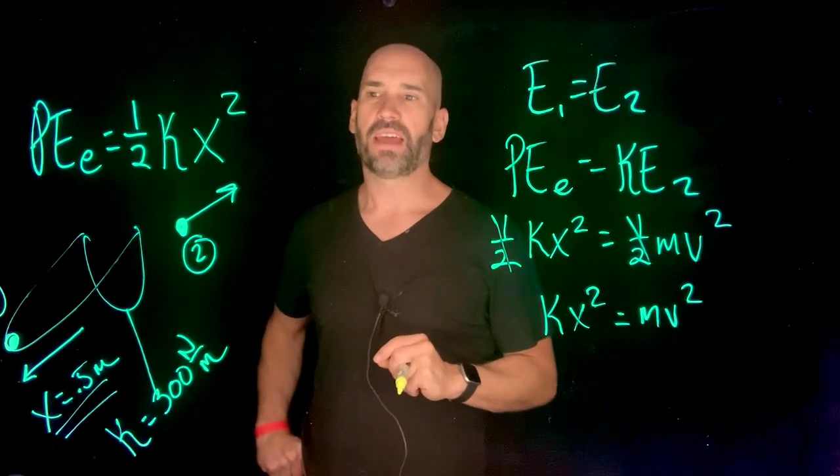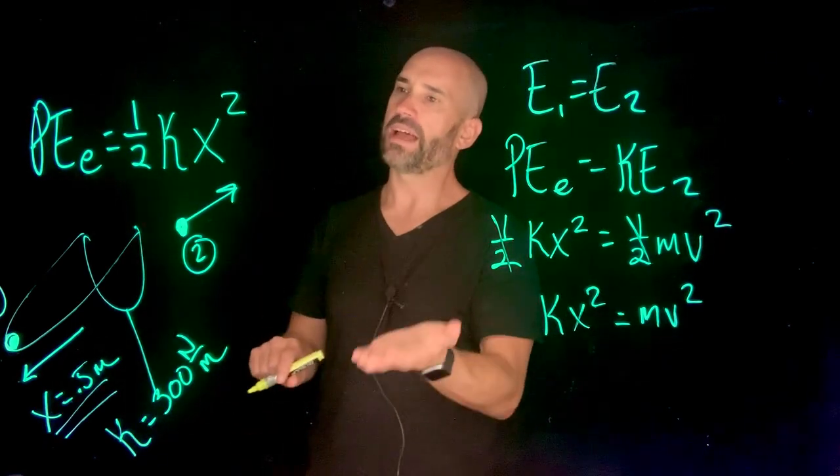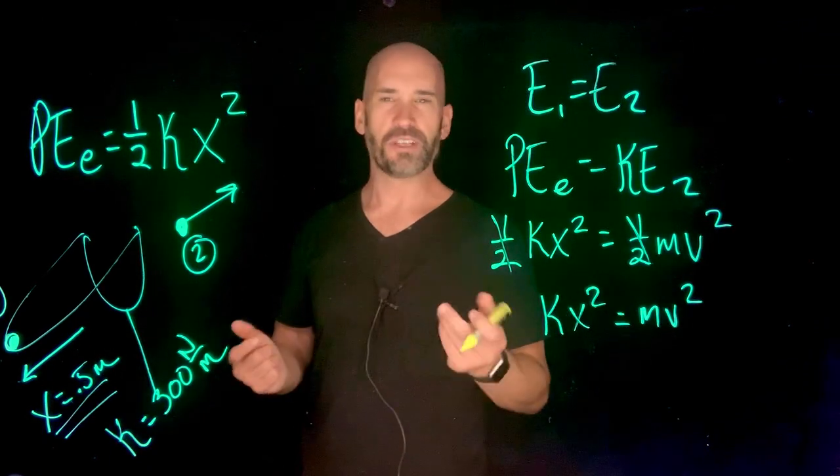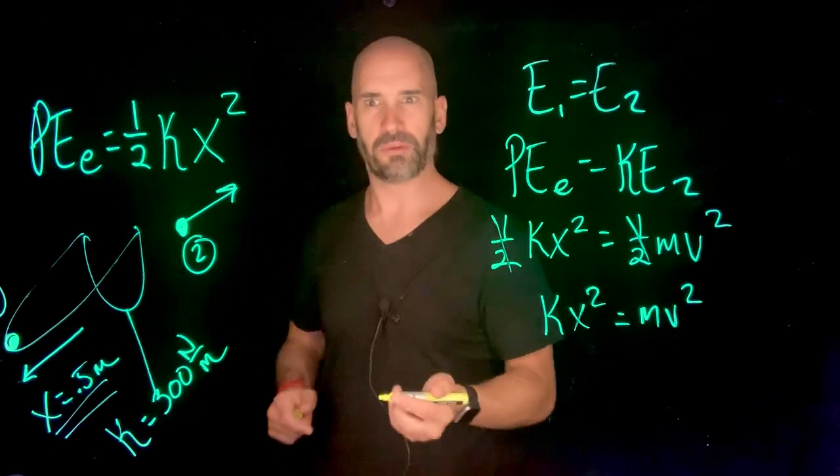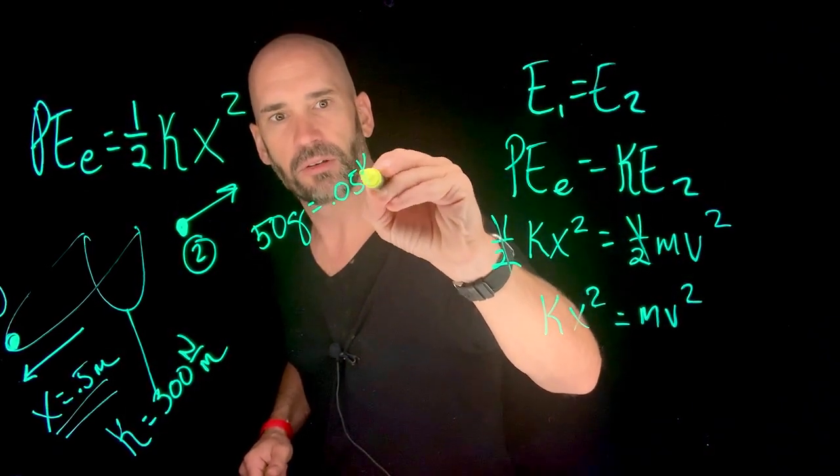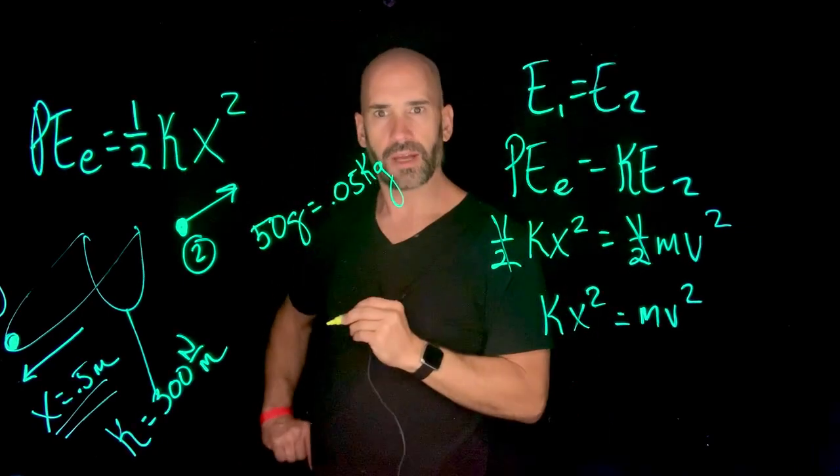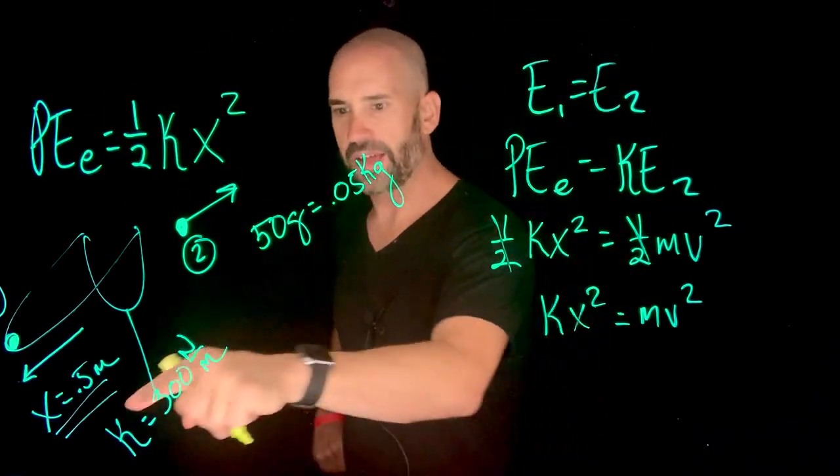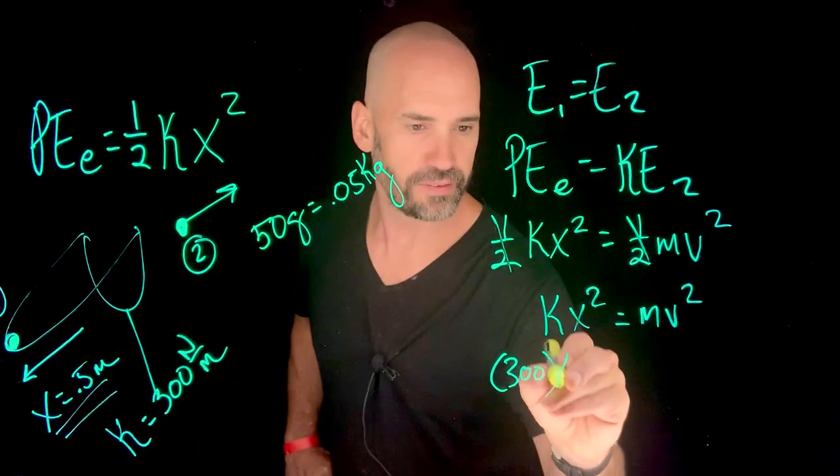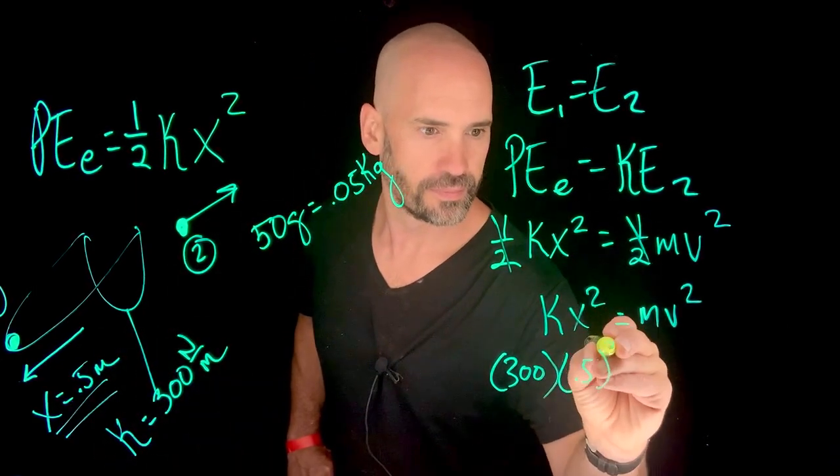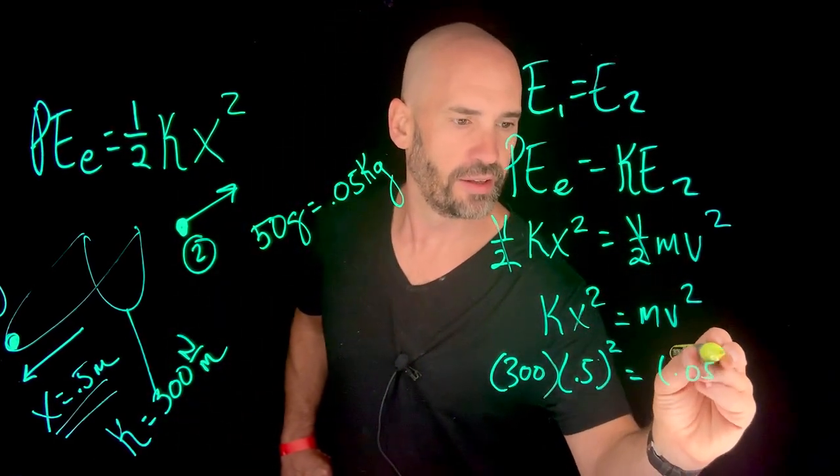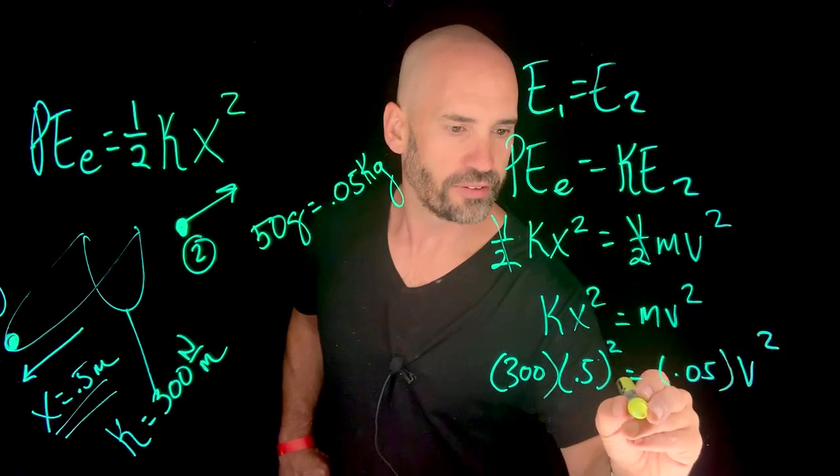Well, I don't know. I would say a typical stone probably has a mass of maybe 50 grams, let's say. Typical pebble. So let's say 50 grams, which will be 0.05 kilograms. So my k is 300. My x is 0.5. And my mass is 0.05. And I want to solve for v.